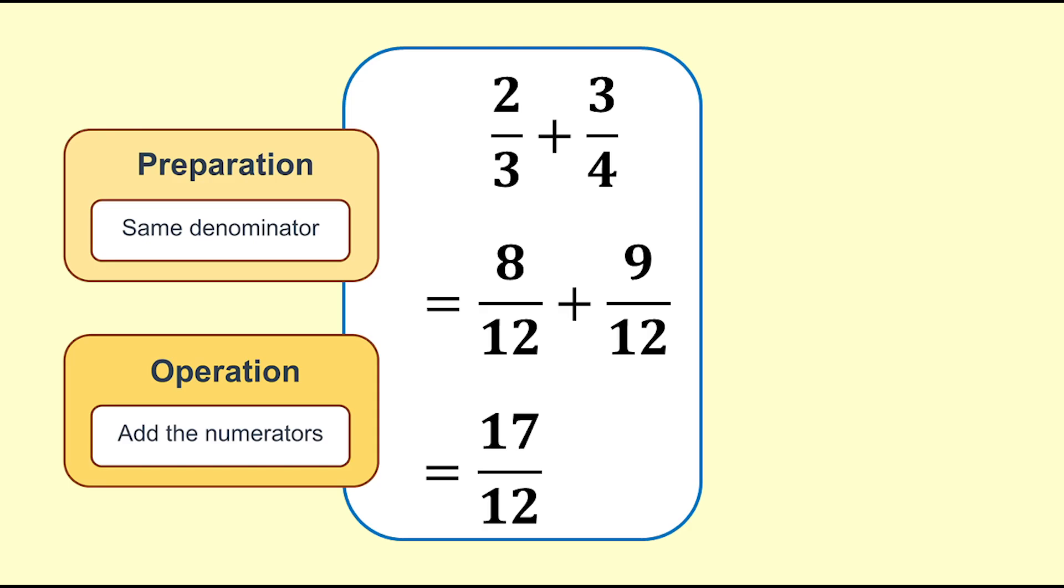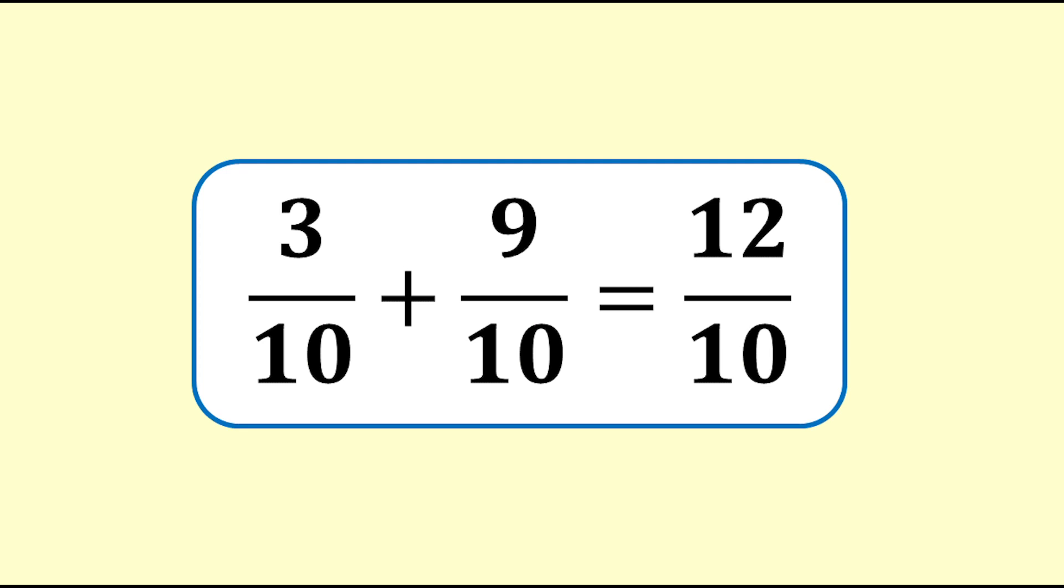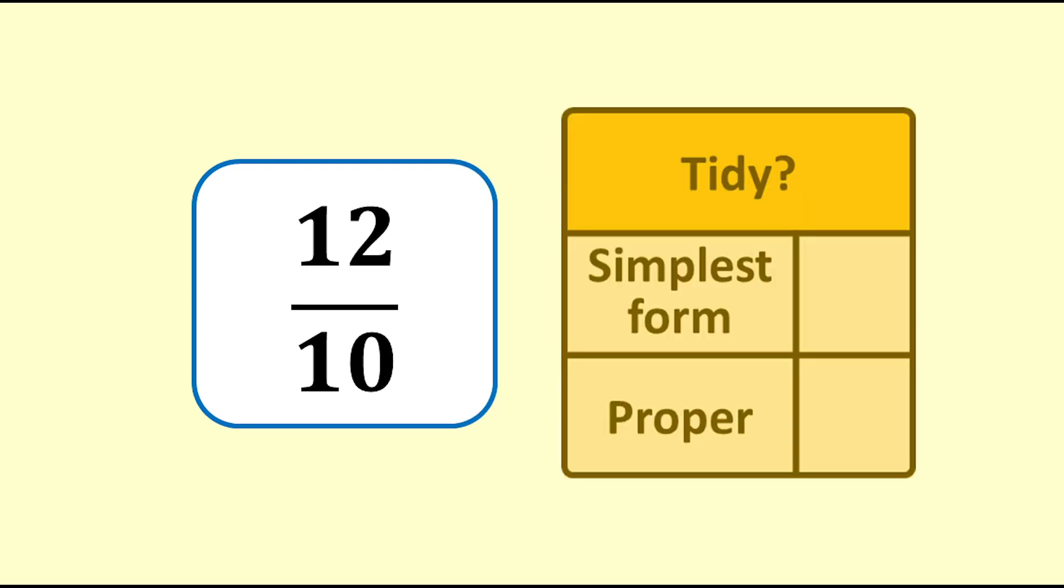The result of a fraction operation is often not in its tidiest form. For example, 3 tenths plus 9 tenths equals 12 tenths. Is 12 tenths tidy? There are two aspects to consider. Simplest form and proper.